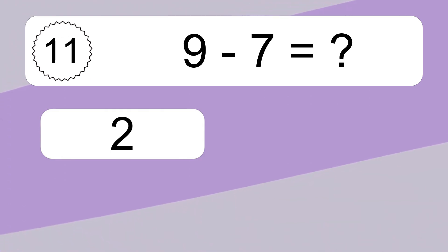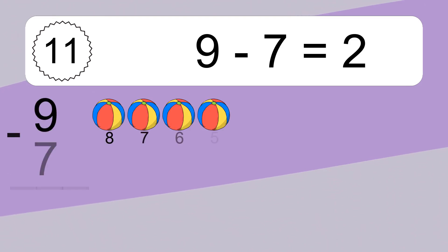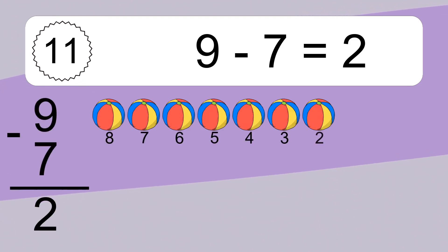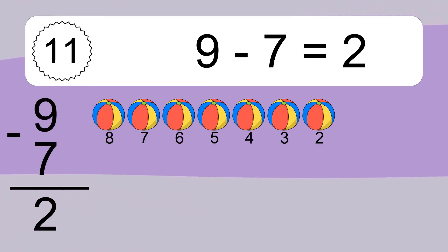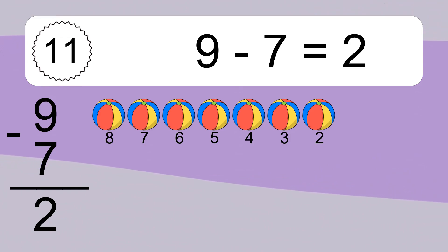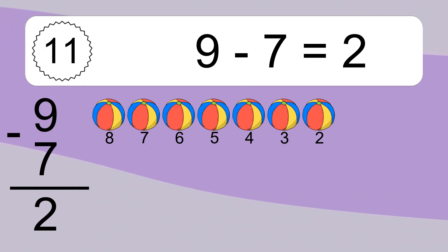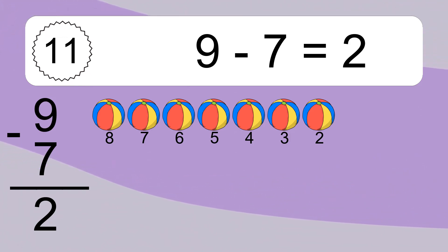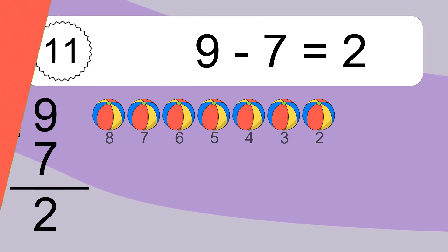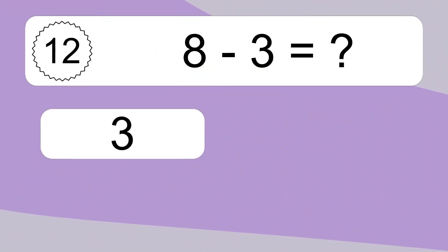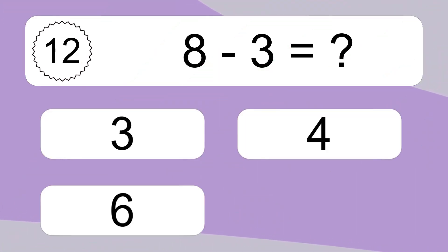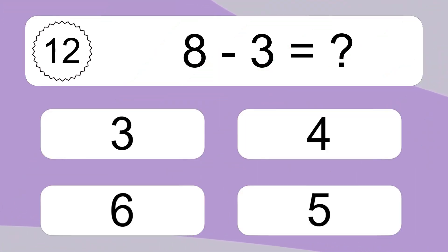9 minus 7 equals 2. Let's count it: 8, 7, 6, 5, 4, 3, 2. 8 minus 3 equals what?